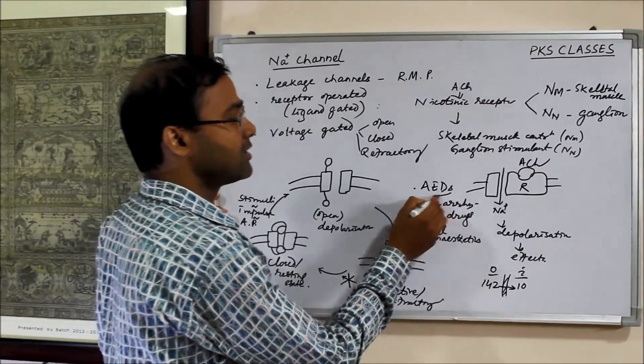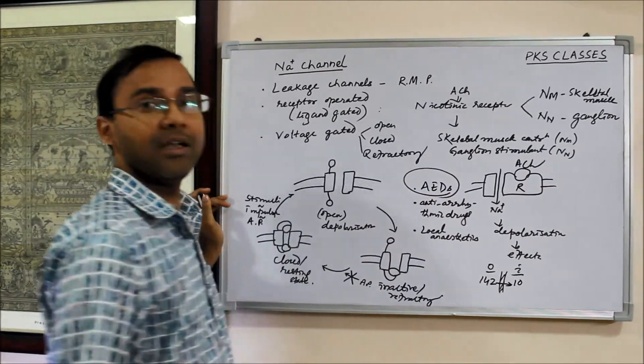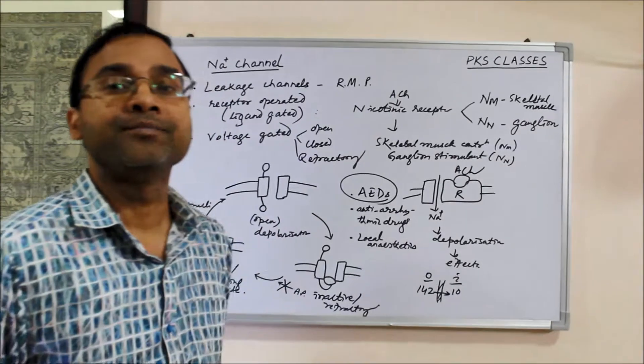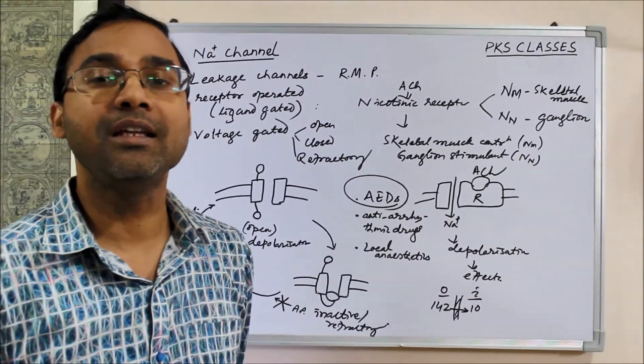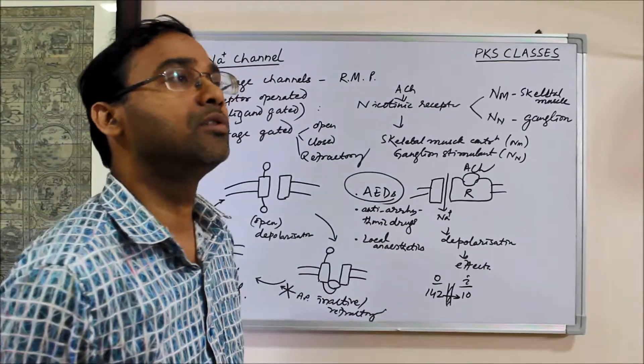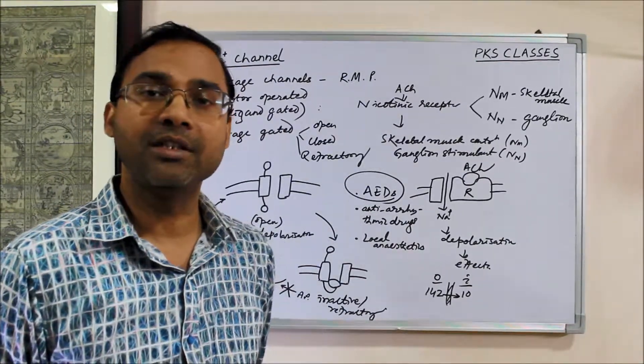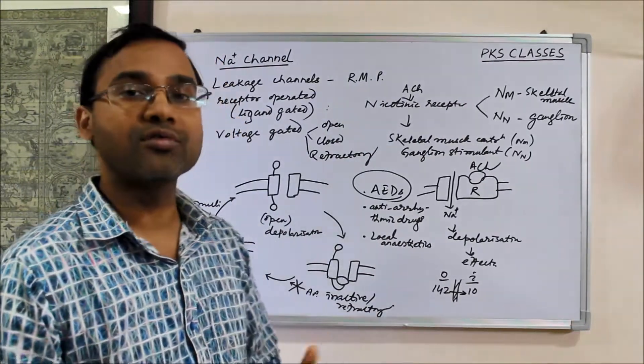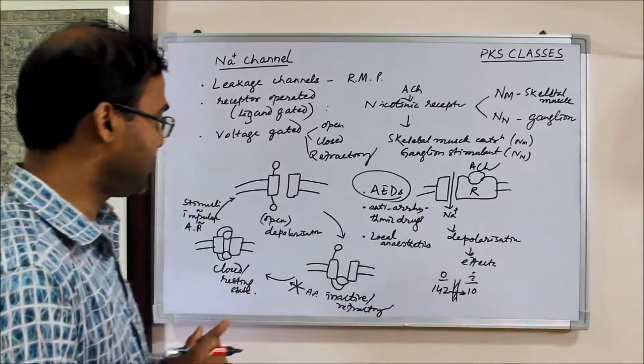Let us give one example of anti-epileptic drugs. As we know, epilepsy is nothing but high frequency discharges by a group of neurons in the brain. There is hyper excitability and hypersynchrony. A group of neurons are excited.